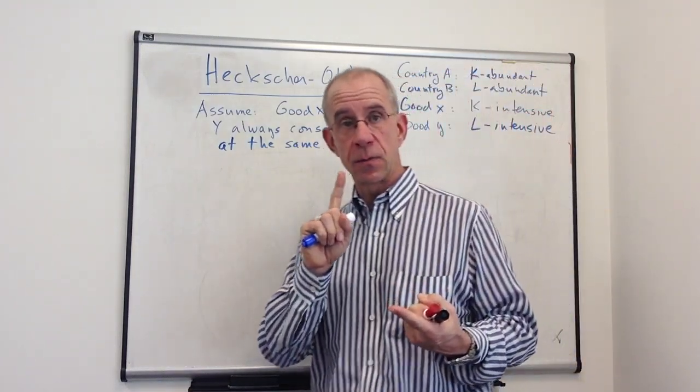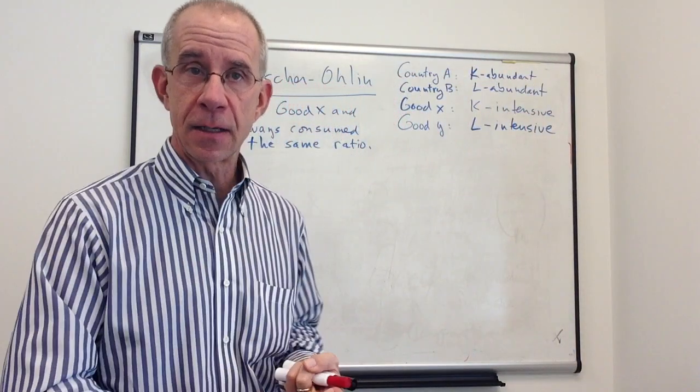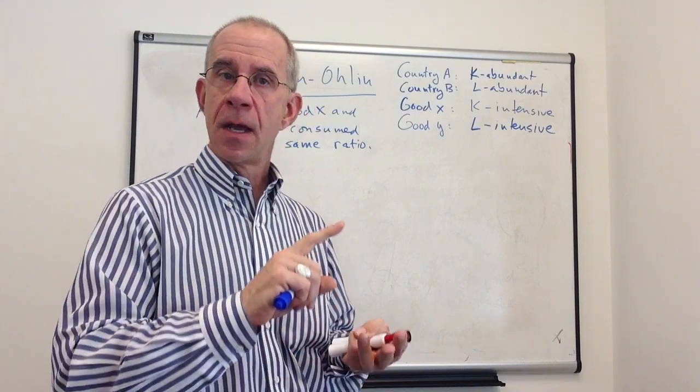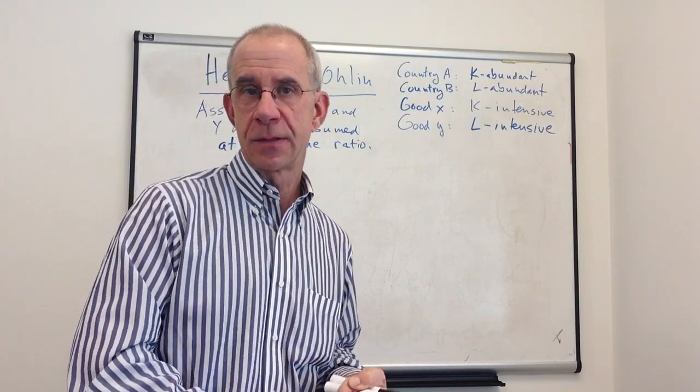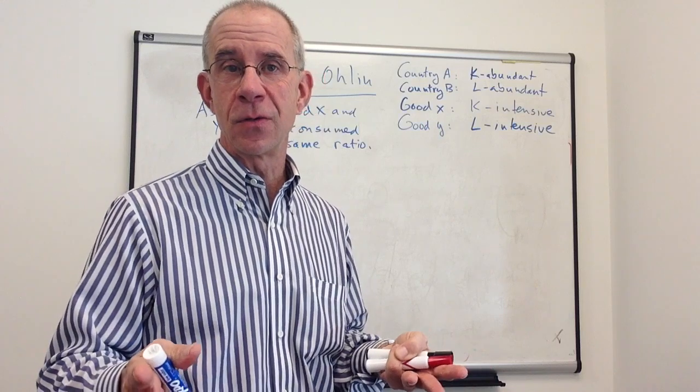So if you recall, Heckscher-Ohlin assumes identical technologies, identical tastes across countries, but that the factor endowments, the relative factor endowments of the two countries differ.